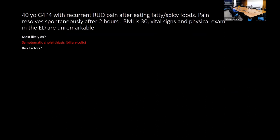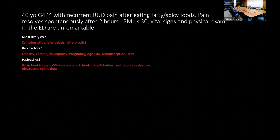Risk factors for cholelithiasis include the classic saying 'fat, female, and fertile' — obesity, female sex, multiparity, and age. TPN can cause cholesterol gallstones, and rapid weight loss can also predispose. The pathophysiology of pain: fatty food triggers cholecystokinin release, which leads to gallbladder contraction against the obstructed cystic duct, causing colicky pain.